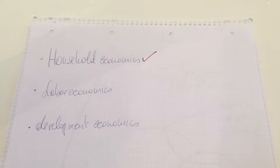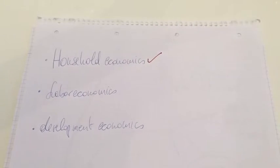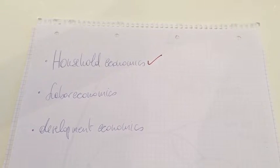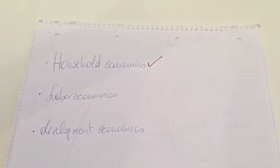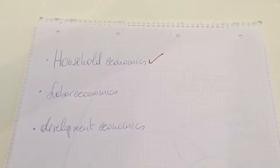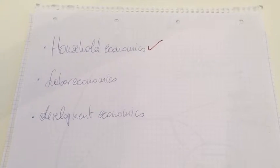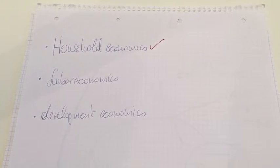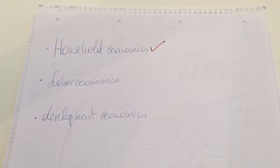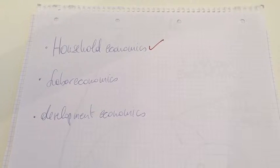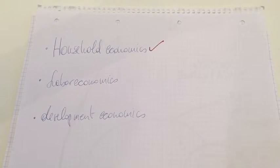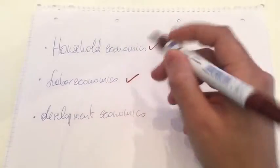In household economics, critiques are aimed at the egocentric agent that at the same time has also an altruistic character. This means that it is thought that agents are egocentric outside the household or at work, for example. However, when interacting with family members, the agent is a completely different one, who is not selfish and distributes his income among all members.